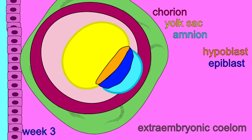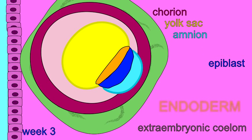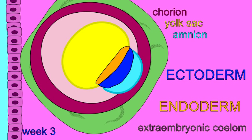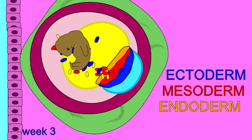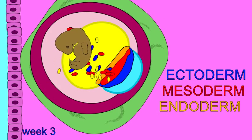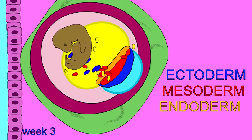In the third week of development, starting day 15, a process known as gastrulation occurs. Cell migration and differentiation produces the three fundamental tissues of the embryo. The hypoblast becomes the endoderm, the epiblast becomes the ectoderm, and between these two forms a new layer known as the mesoderm. From these basic embryonic tissues will come the cells to compose the body of the fetus.